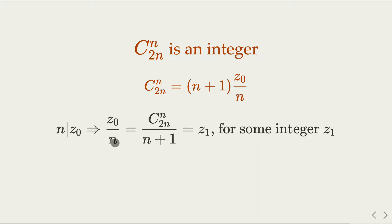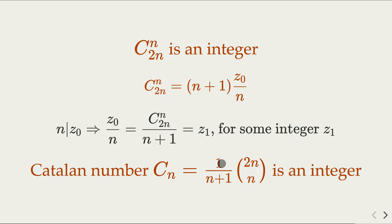That integer happens to equal this 2n choose n divided by n plus 1. Well, because you divide n plus 1 on both sides for this equation, you're going to get this is indeed an integer. So we reached the conclusion that the Catalan number defined as Cₙ is 2n choose n divided by n plus 1 is indeed an integer. Right? So that's the proof.